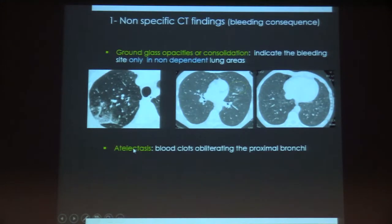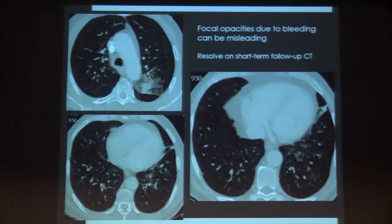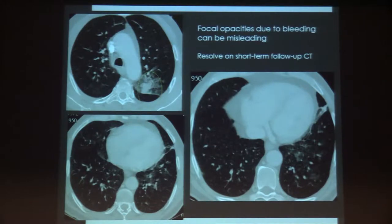A second non-specific finding is atelectasis, when blood clots obliterate the principal bronchi — as in this case of haemoptysis following percutaneous core biopsy, where clots had to be removed by bronchoscopy. These focal opacities can sometimes be misleading: here, a pulmonologist suspected lung cancer, but I suggested follow-up since the patient had a massive haemoptysis. In one week the opacity partly resolved, confirming it was only a consequence of local bleeding. Short-term follow-up is essential to avoid this kind of confusion.